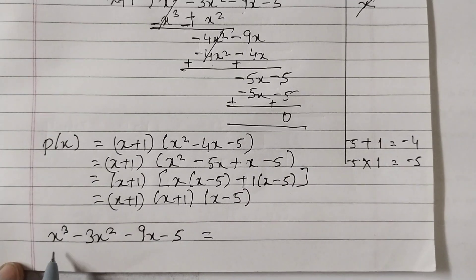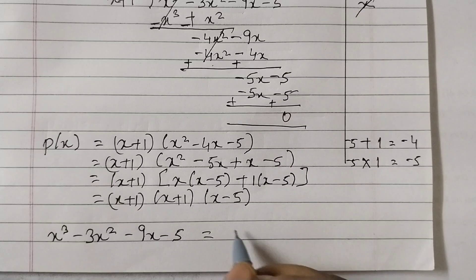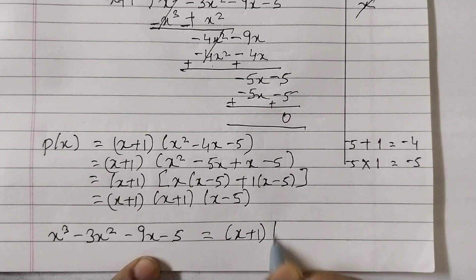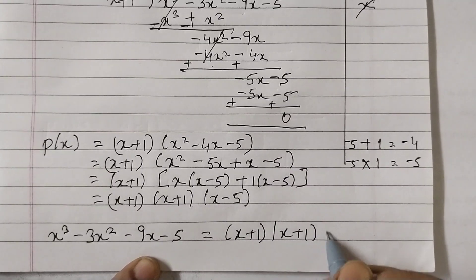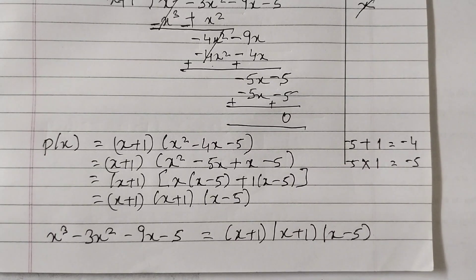Final answer we can write as x cubed minus 3x squared minus 9x minus 5 equals x plus 1, x plus 1, x minus 5. And this is the final answer. So first find out the factors of the constant term by trial method, see which would give you 0. That would be one factor. Then use long division and then splitting the middle term.